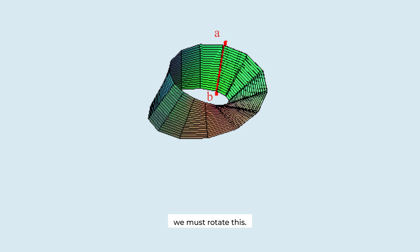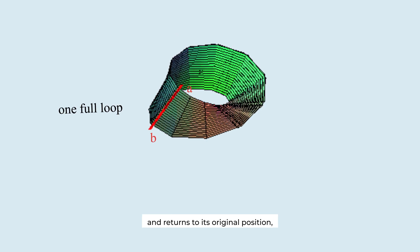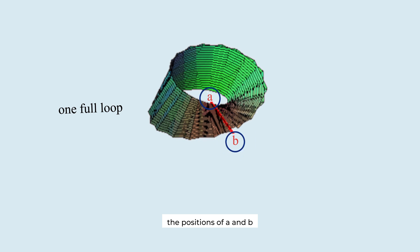As we move the line we must rotate it. When it completes one full loop and returns to its original position, the positions of A and B must be swapped. That's the essence of the Möbius strip. Its boundary is a single continuous loop. The equation is created based on this idea.